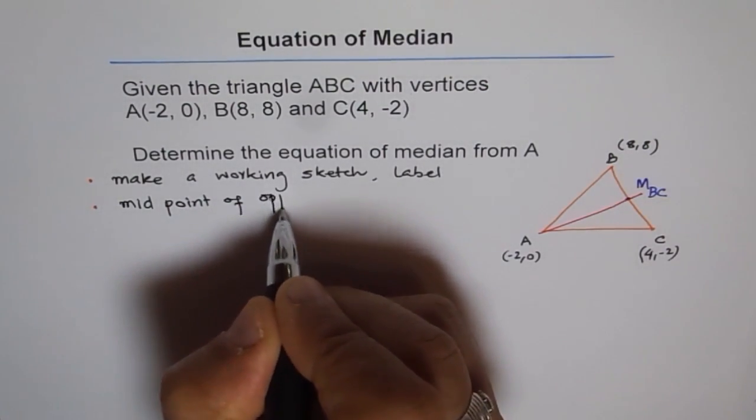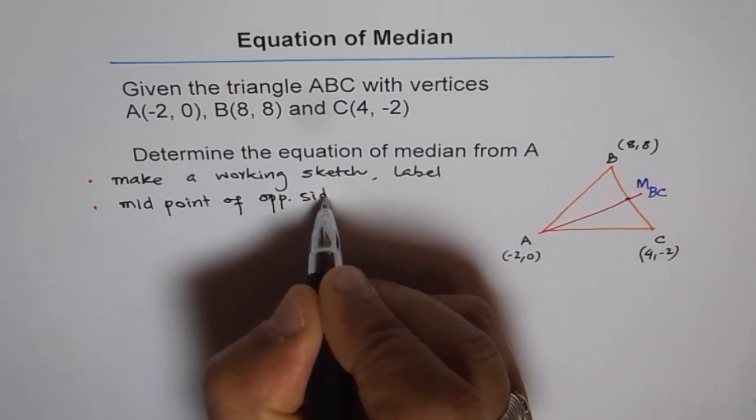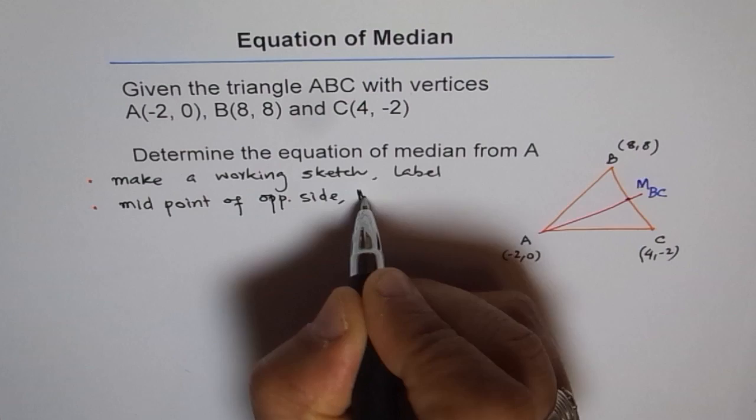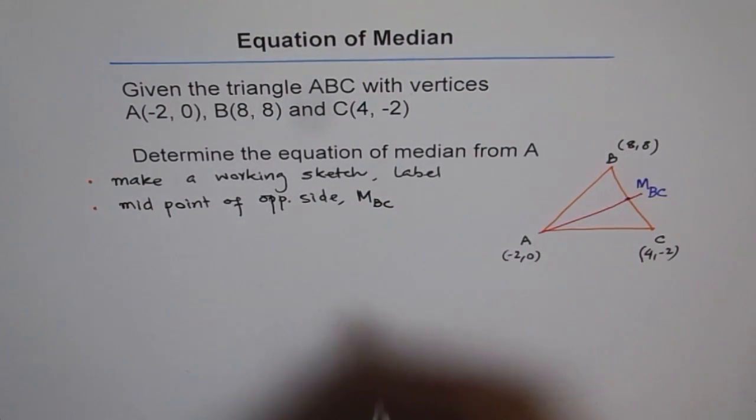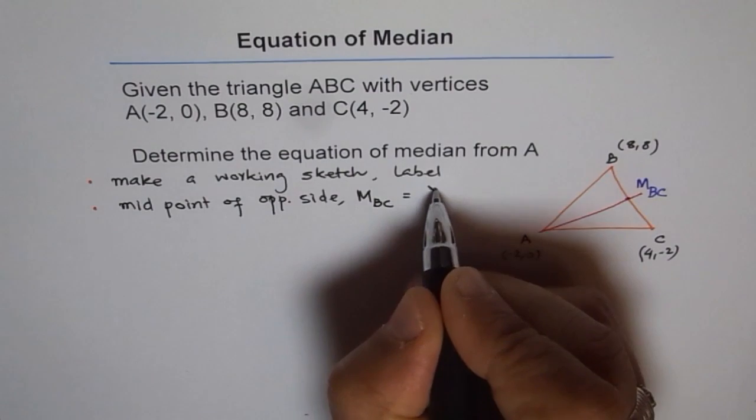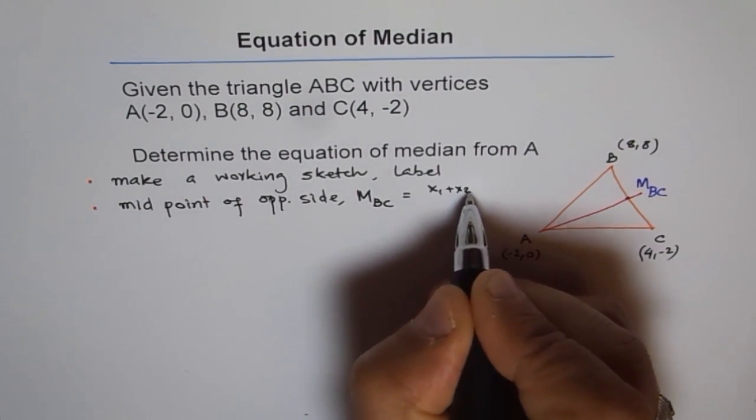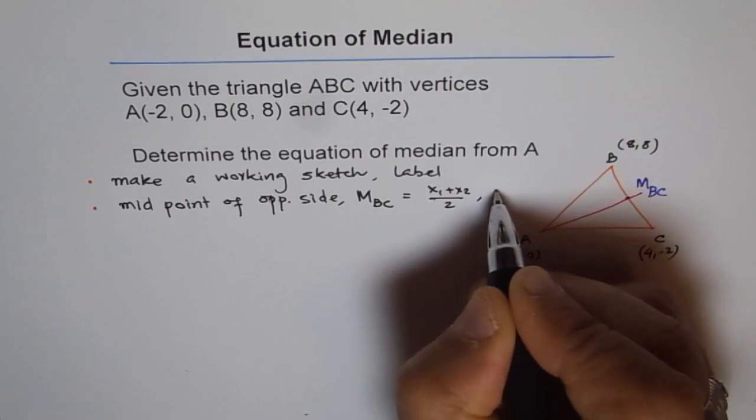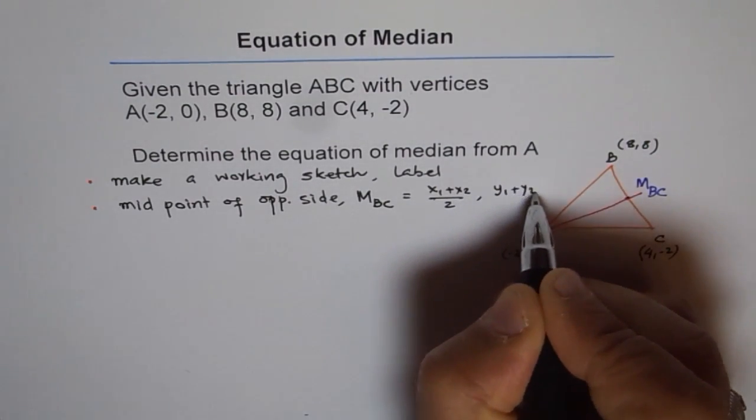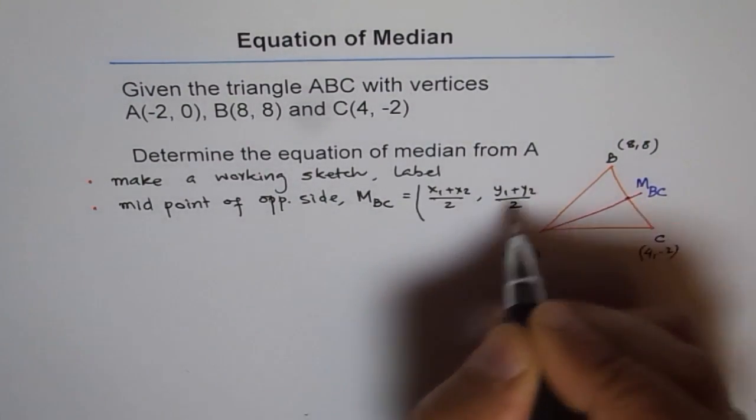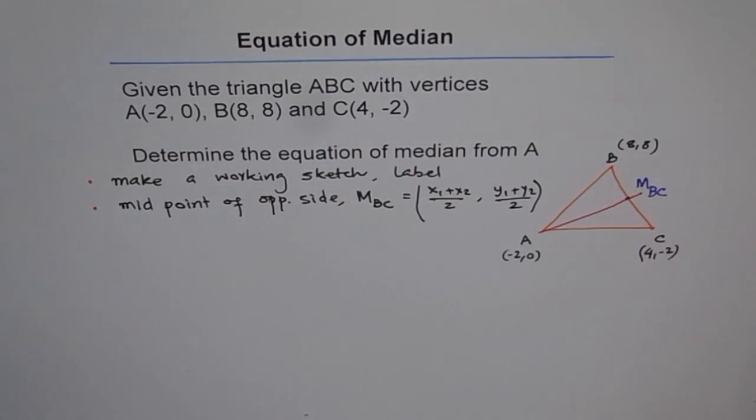So we find midpoint of BC, opposite side, which is BC in our case. And we'll label this as M_BC. And the formula to be used is X1 plus X2 over 2 times Y1 plus Y2 over 2, correct? Use this formula and find the midpoint. Let's use it now and find the midpoint.